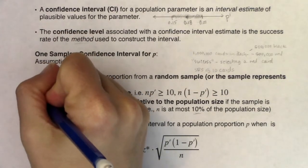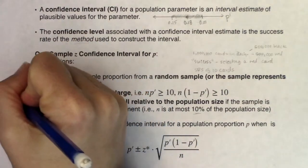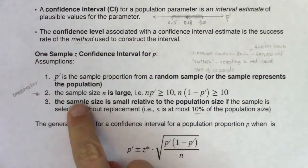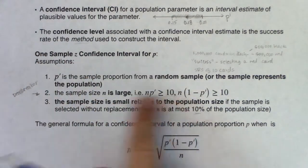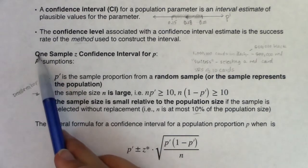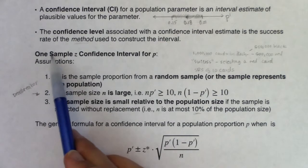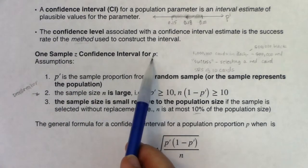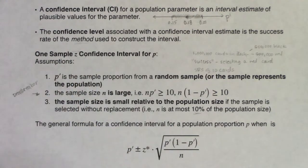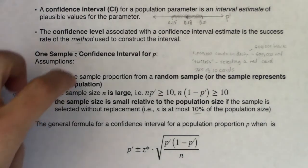The most important assumption is number two — the deal breaker — because it gives us the approximately normal sampling distribution. If that assumption is not met, stop the problem. We're making a one-sample proportion confidence interval here in chapter 8, using a z critical value.